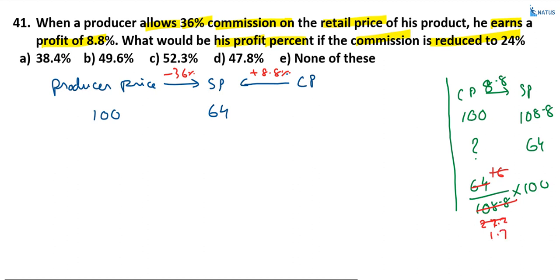So, what is the cost price? That is equal to 100 by 1.7. If the person marks goods at 100 rupees and gives a commission of 36%, the selling price is equal to 64, giving a profit of 8.8%. This is the first equation. Now, if the commission is reduced to 24%, the difference is 36 minus 24 equals 12%, so the new selling price is equal to 88.